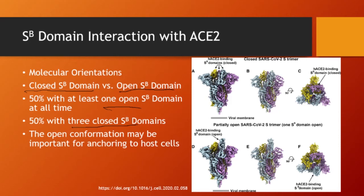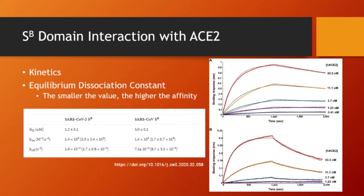It's believed that the open conformation may be important for anchoring to the host cell — like casting a hook to hook onto the ACE2 protein. Now let's look at this more mathematically, in terms of kinetics. We have a term called equilibrium dissociation constant, or K sub D. K sub D is calculated based on K-on and K-off. Looking at the graph, the top shows interactions of SARS-CoV-2, and the second figure shows CoV-1.